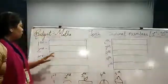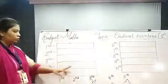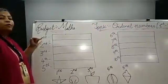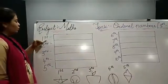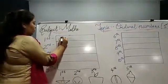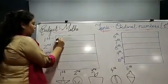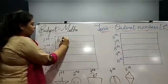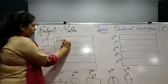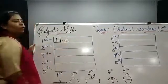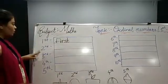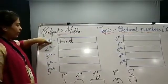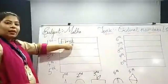Now we will write spellings from 1st to 10th. So students, always 1st letter capital. So, F, I, R, S, T — First. आपको यहाँ पे दिखा है, 1st में 'ST' लिखा है, and last में भी 'ST' है.